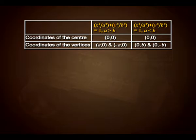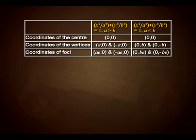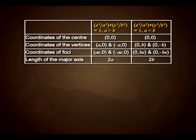For the coordinates of the vertices: in the first case (a > b) the vertices are (a, 0) and (−a, 0), whereas for the second case (a < b) the vertices are (0, b) and (0, −b). The coordinates of the foci for a > b are (ae, 0) and (−ae, 0), and for a < b are (0, be) and (0, −be). Length of the major axis is 2a for the first case and 2b for the second.